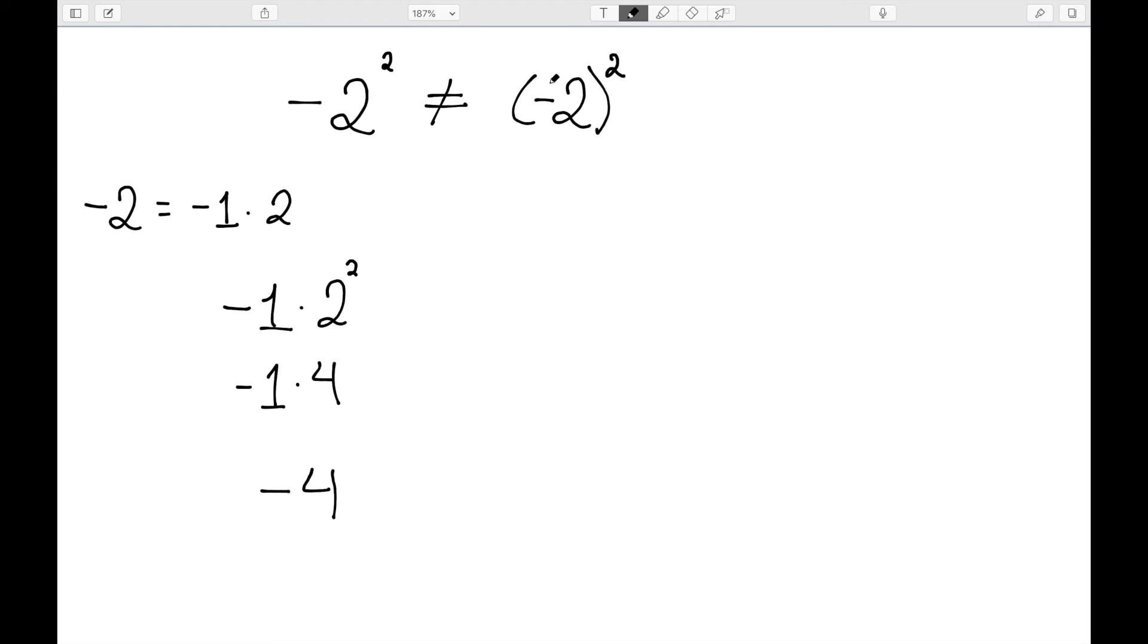Whereas over here on the right side, we would do the multiplication first, and then the exponent to get a total of 4. So these are different, and whenever we're dealing with negatives and exponents, we need to make sure to be careful about parentheses.